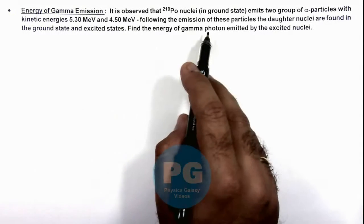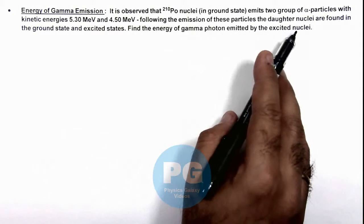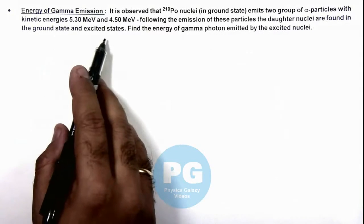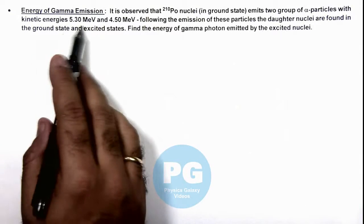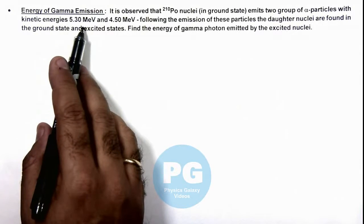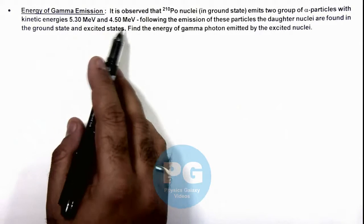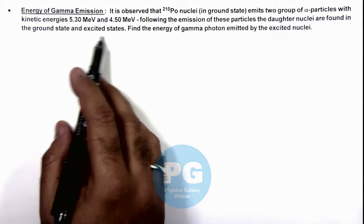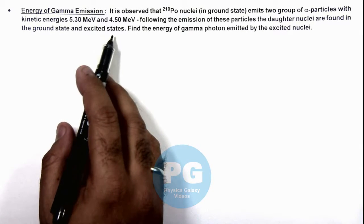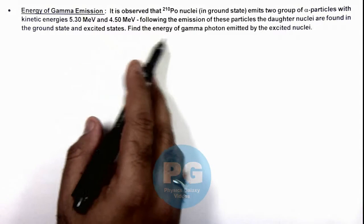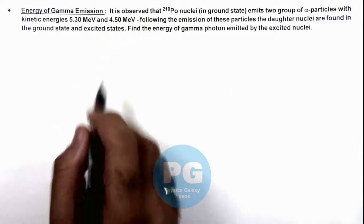Following the emission of these particles, the daughter nuclei are found in ground state and excited state. When 5.3 MeV is emitted, the daughter nucleus is in ground state. When 4.5 MeV is emitted, it is in excited state. We need to find the energy of gamma photon emitted by the excited nucleus.